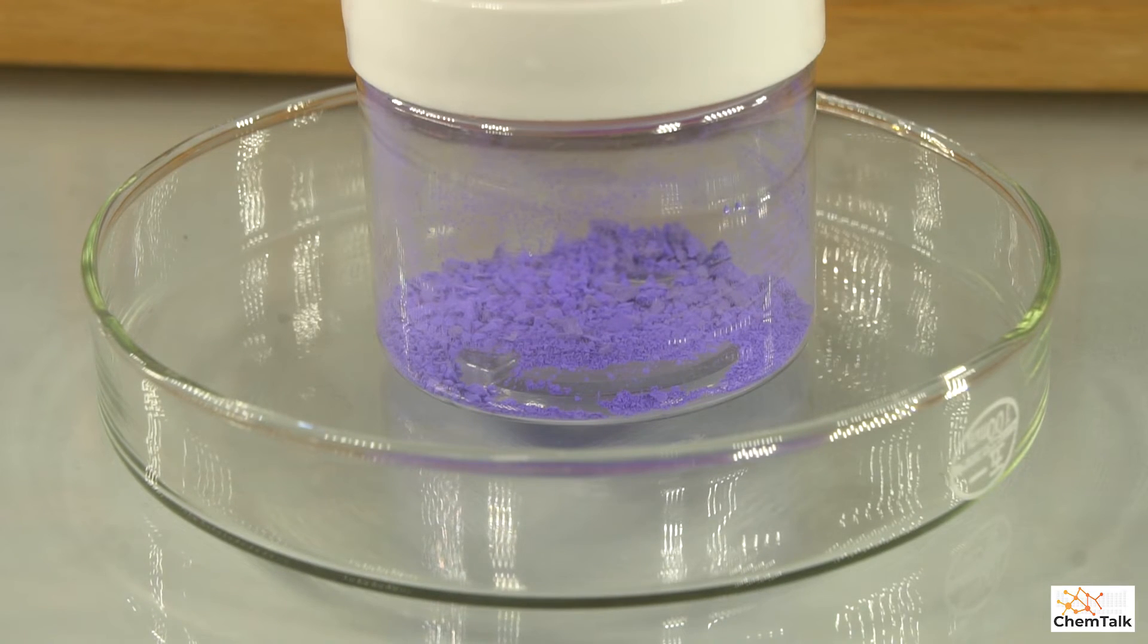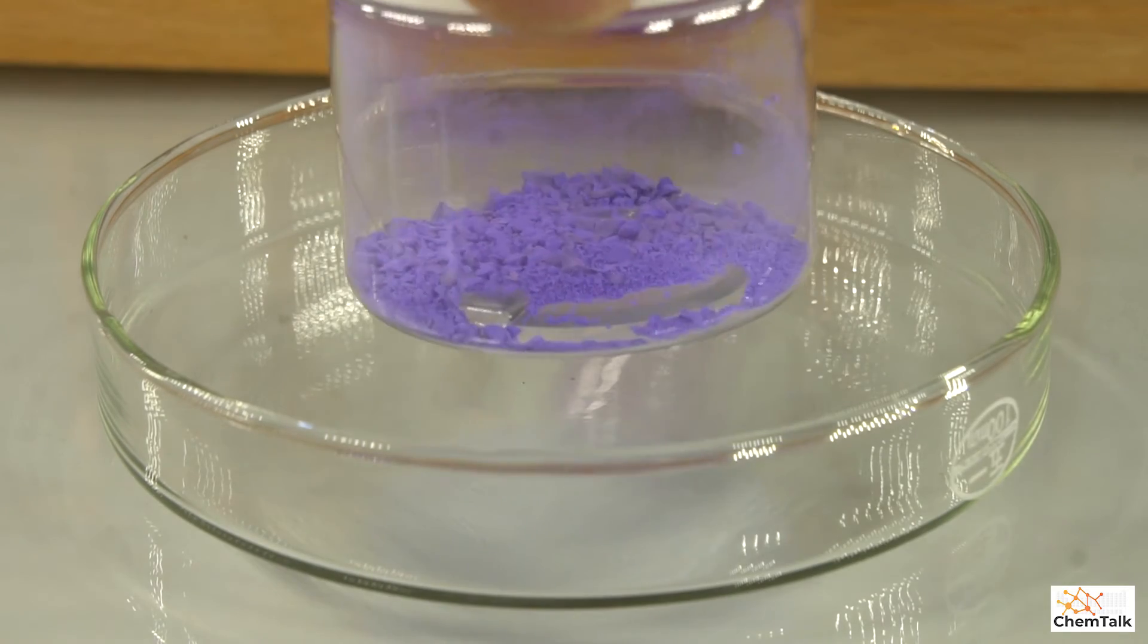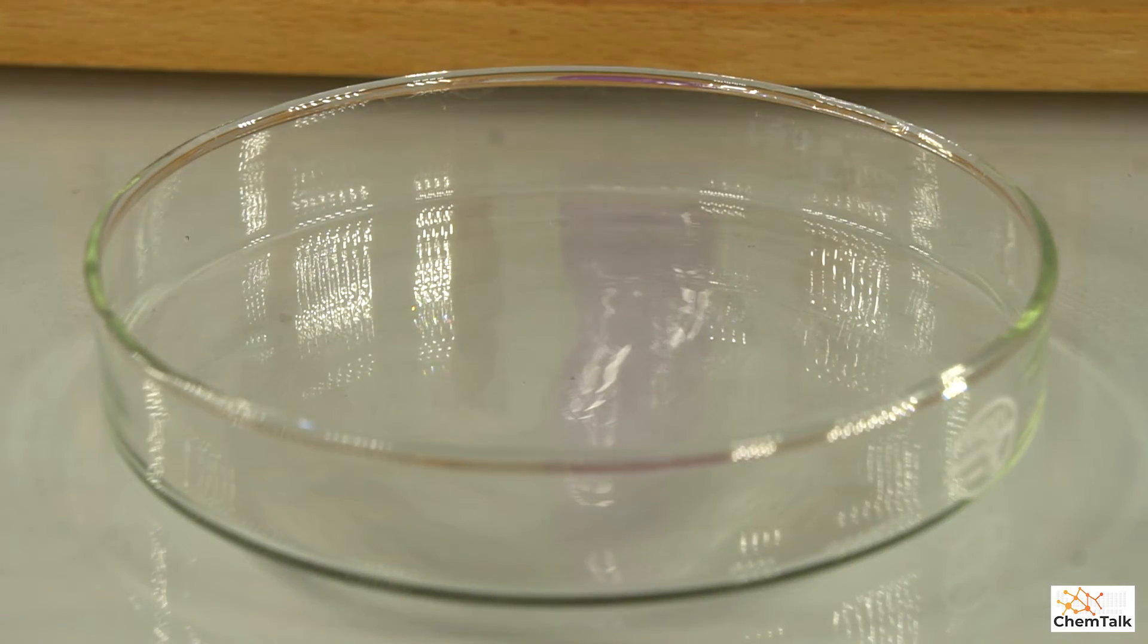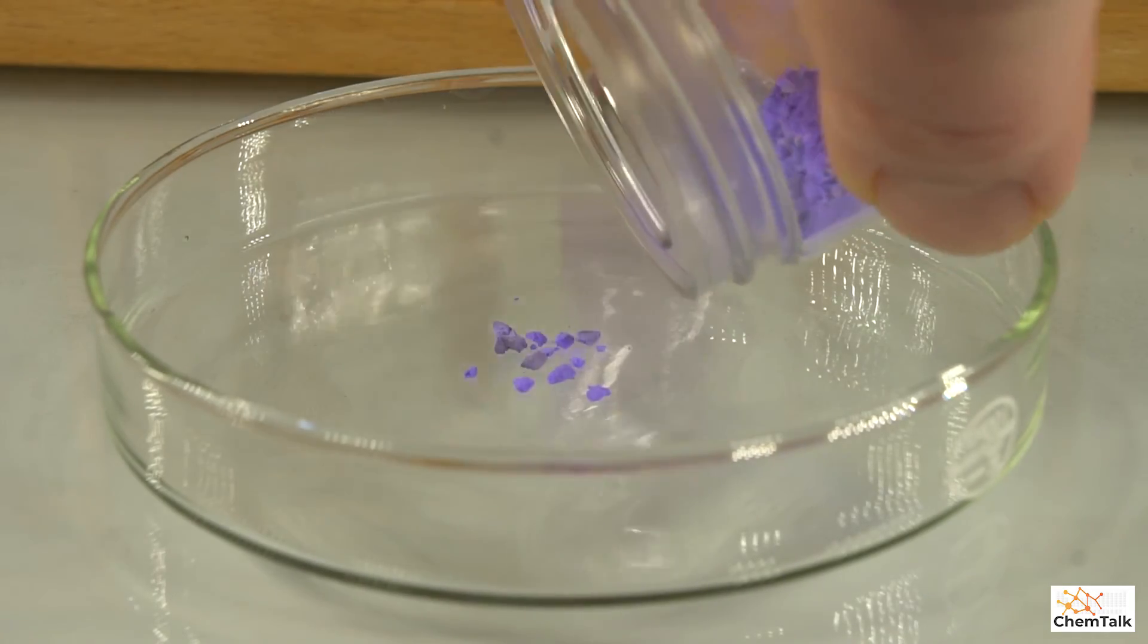So while we're waiting for the precipitate to settle, I'm just going to show you some of the dried out cobalt molybdate that I had made before. And you can see it's a beautiful purple solid.